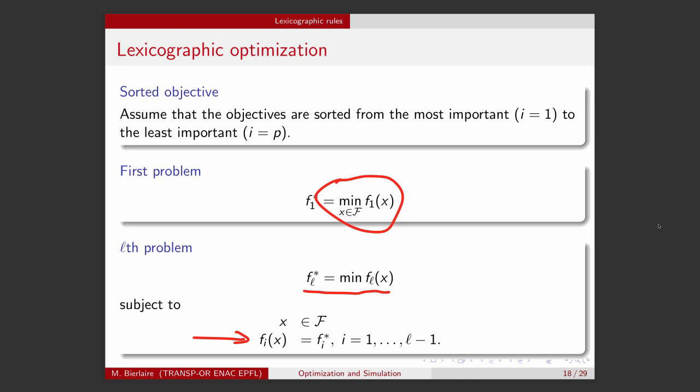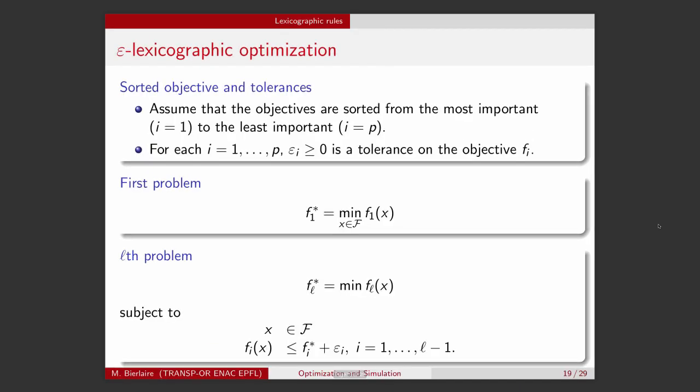Therefore, there is a relaxed version of this lexicographic optimization called the epsilon lexicographic optimization. The principle is the same, but for each objective, we introduce a tolerance. So, we are happy with degrading the optimal value of the objective function in order to optimize the other. So, the formulation of the problem is exactly the same. We start by optimizing the first objective function. And the only difference is that now we impose for further problems the value of the objective function to be less or equal to the optimal value plus this tolerance that we have introduced.